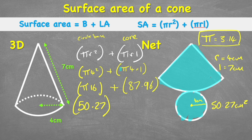Just a quick note: when all of our processes are multiplication, it doesn't matter which order we put those numbers — we're going to get the same answer. To prove it, I'll flip it around and do l times 4 times pi: 7 times 4 times pi, and I get exactly the same answer, 87.96.